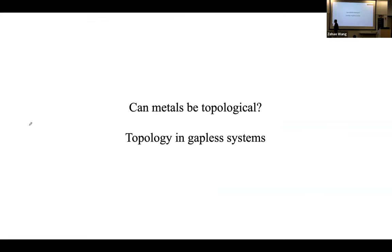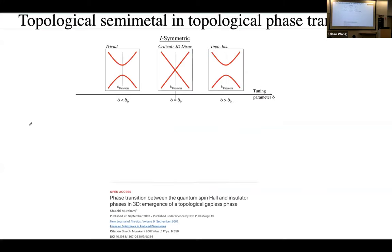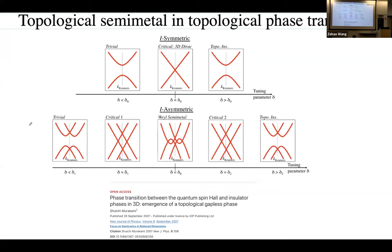Now we're ready to discuss Dirac and Weyl semimetals. These are the gapless analogues: we've discussed gapped topological phases, but what about gapless systems — metals? Can they have topology? This was first studied by Murakami, who showed that when you break inversion symmetry and tune through a topological phase transition from trivial to topological insulator, you must pass through an extended gapless semimetal phase.